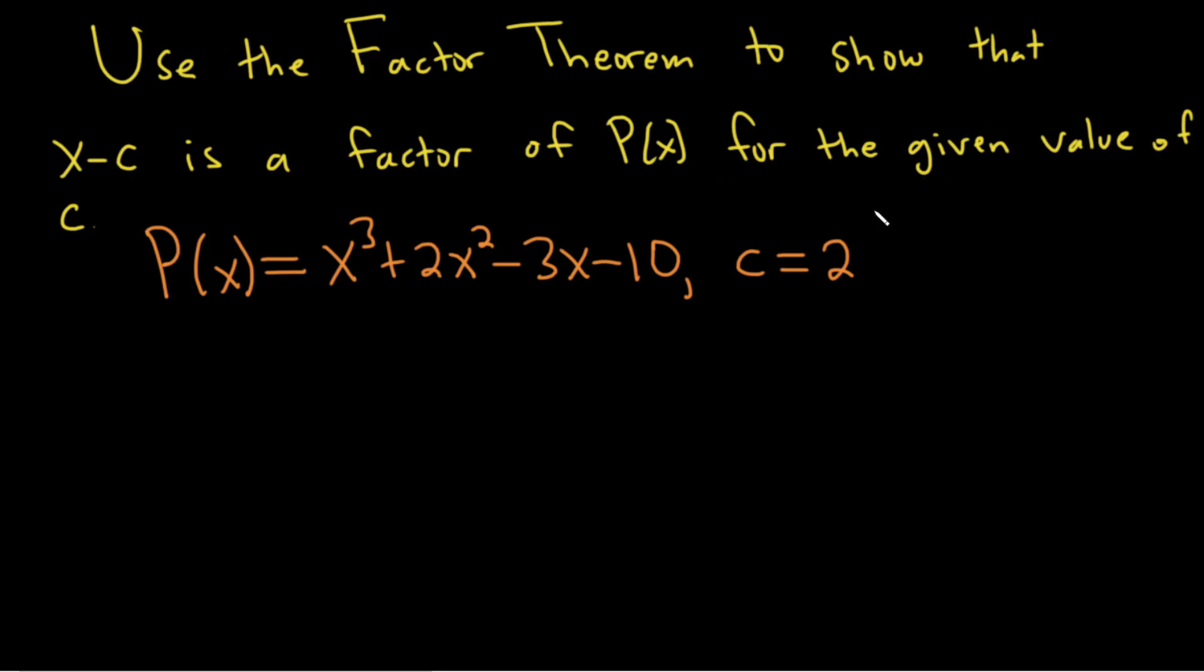So the factor theorem is pretty simple. It just says that c is a 0 of P if and only if x minus c is a factor of P. So this works for polynomials.